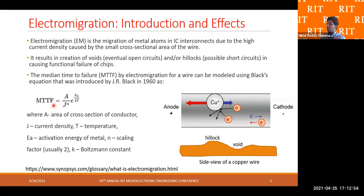This phenomenon of electromigration failure time can be modeled using Black's model, which is shown here. It states that the failure time is dependent on the current density, the cross-sectional area of the conductor, the temperature, and other factors like the activation energy of the metal. Here is a side view of a copper wire showing how the high density of electrons tends to create voids or hillocks within the wire.